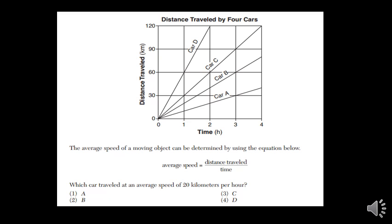Average speed of a moving car can be determined by using the equation below where average speed equals distance traveled divided by time. Which car traveled an average speed of 20 kilometers per hour?